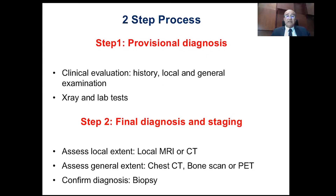The diagnosis and staging is a two-step process. Step one is the provisional diagnosis, obtained by doing a thorough clinical evaluation and ordering X-rays and lab tests. Step two is where you reach the final diagnosis and staging — done by assessing the local extent using a local MRI or CT, assessing the general extent by doing a chest CT and a bone scan or PET-CT, and confirming the diagnosis with a tissue diagnosis using a biopsy.